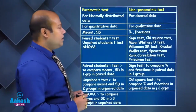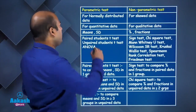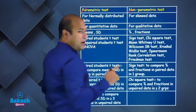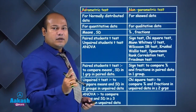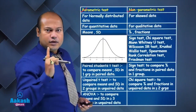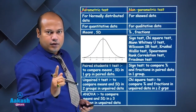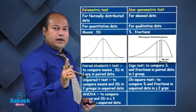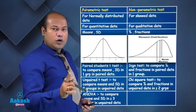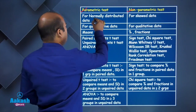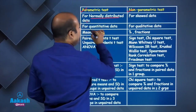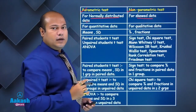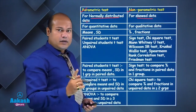Statistical tests can be parametric or non-parametric. Remember, parametric tests are always done for normally distributed data, whereas non-parametric tests are done for skewed data — data which is not normally distributed. This is for normal distribution data and this is for skewed data.